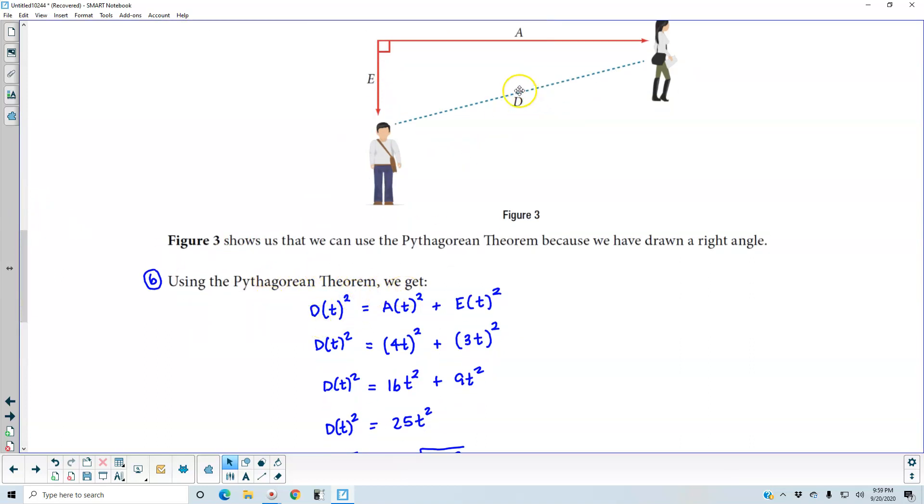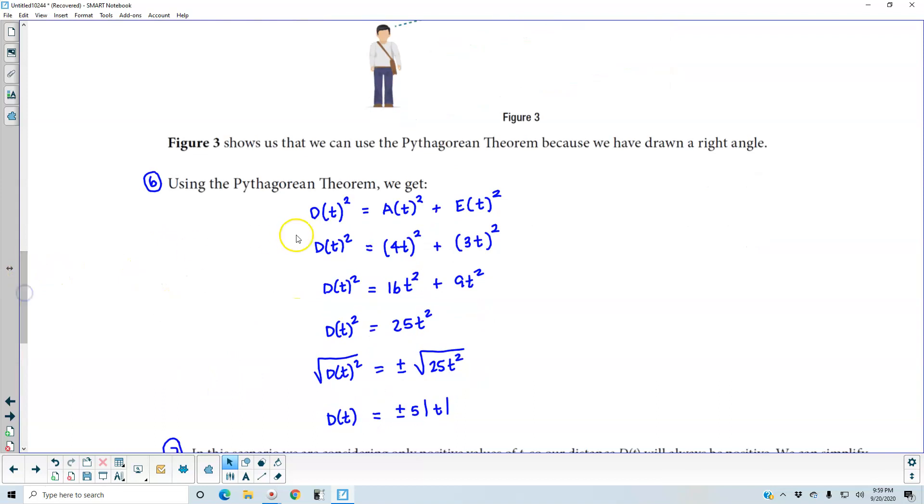So we're going to take D(t), which is D, and squared, which is going to equal the distance for Anna, A(t) squared, plus the distance for E(t) squared, which is Emanuel. So we have D(t) squared, which is equal to 4t squared, which gives us 16t squared, plus 3t squared, which gives us 9t squared.